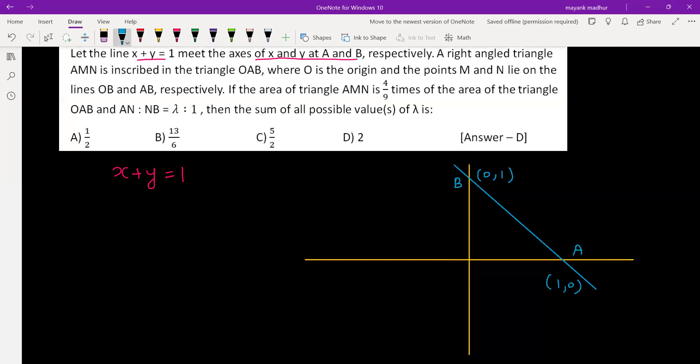O is the origin. We have been given that a right angle triangle AMN is inscribed in the triangle OAB, where O is the origin, M and N lies on OB. M lies somewhere here and N lies on AB.